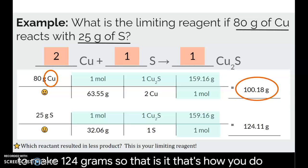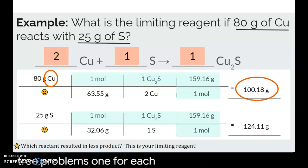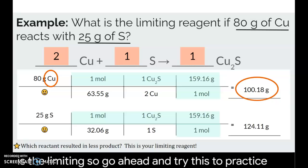So that is it. That's how you do limiting reagents. You just have to do two stoichiometry problems, one for each reactant. Your product is always your wanted. And whichever one produces less is the limiting. So go ahead and try those two practice problems on the back.